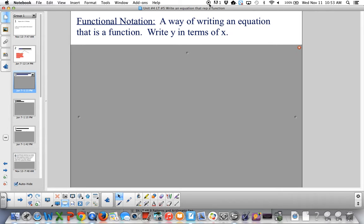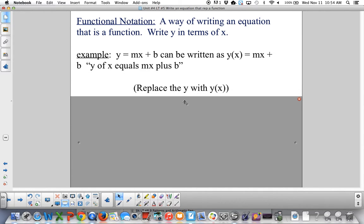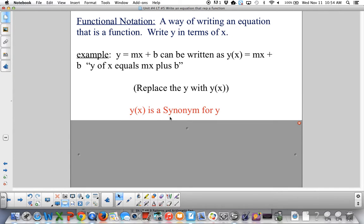Functional notation is a way of writing an equation that is a function. Notation, just like scientific notation, is a way of writing things. We're going to write y in terms of x. So if I have an example of y equals mx plus b, we could write y as a function of x. That's how we say that. And we put y parenthesis x. This means y is happening because it's dependent on what we have for x. So notice nothing else on the other side changes. We say y of x equals mx plus b. We are essentially just replacing the y with y of x. So y of x is a synonym for y.